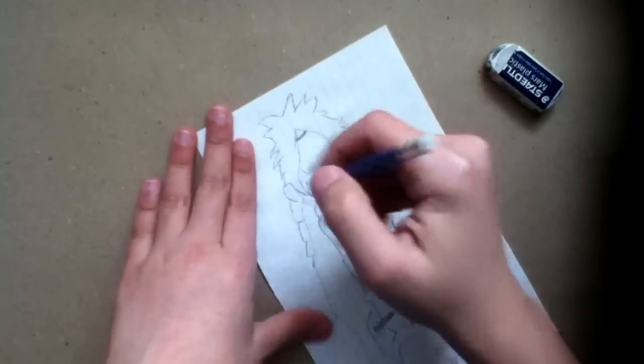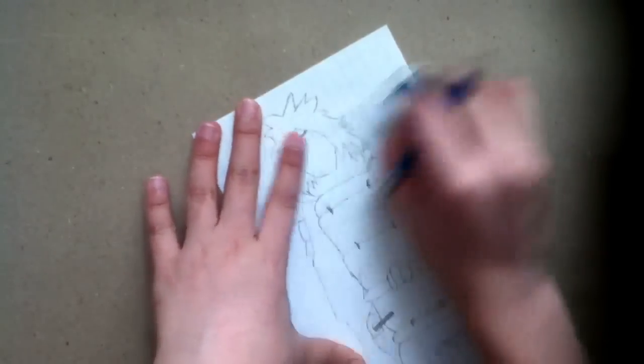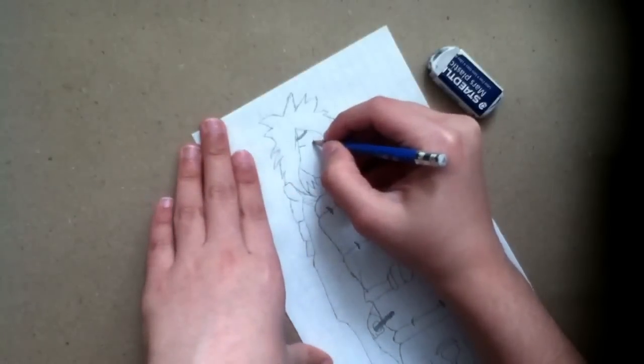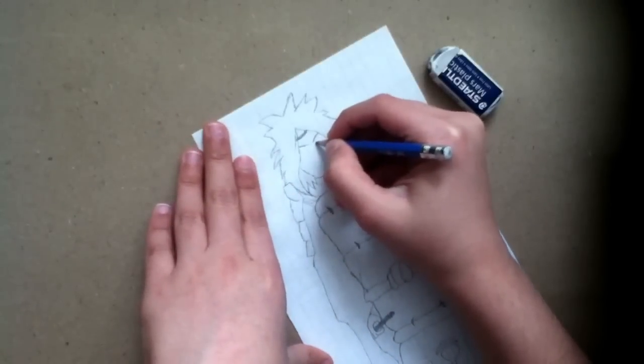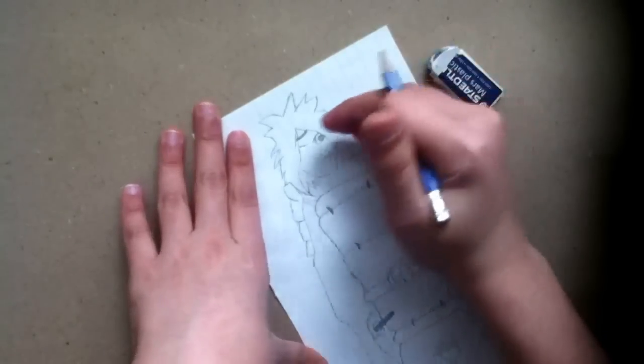That's his headband, one side of his eye and eyebrow, and then the other side. I'll draw his eye on this side. I'll color it in black so it's easy to see.